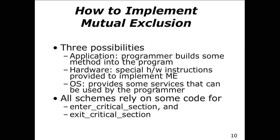I think this is where I stopped last lecture — the concept of how to implement mutual exclusion. There are three different possibilities: application-level, hardware, and operating system. From an application level, a programmer builds some method into the program, creating logic to avoid the possibility of deadlock — that is, programmatically creating mutual exclusion. The other option is hardware or operating system support.